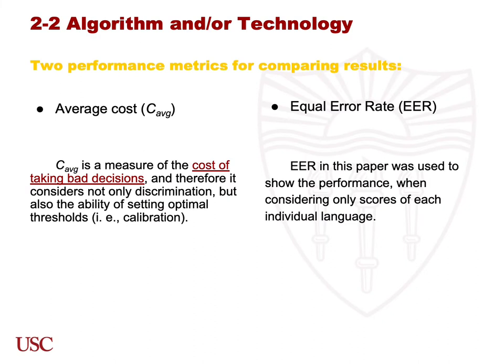Apart from this, the authors used two performance metrics for comparing results. The first one is the average cost, which is a measure of the cost of taking bad decisions. It considers not only discrimination but also the ability to set an optimal threshold. The second one is the equal error rate, which is used to show performance when considering only the scores of each individual language.